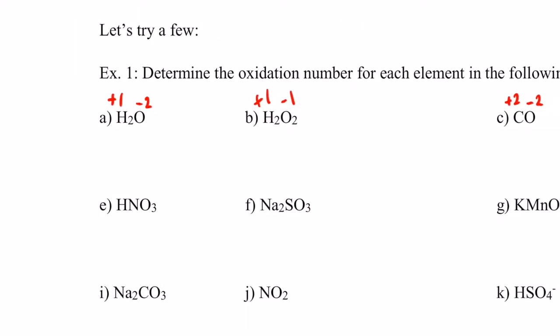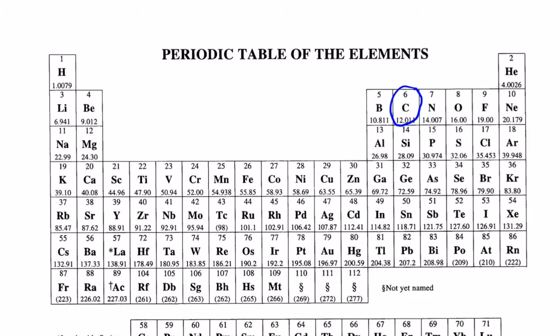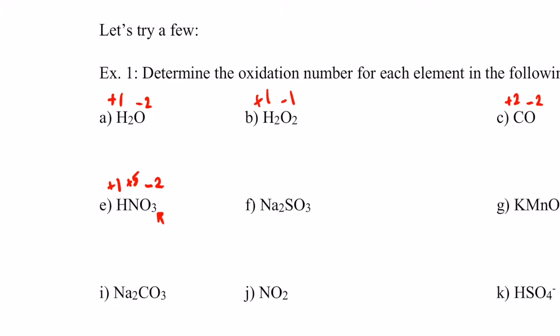For HNO3, with three elements: oxygen is the most electronegative at negative two. Three oxygens give six negatives, so we need six positives. Hydrogen can only be positive one, leaving five more positives for nitrogen. Nitrogen is in group 15 with five valence electrons, so positive five is its maximum — that works. So in HNO3, nitrogen has an oxidation number of positive five.